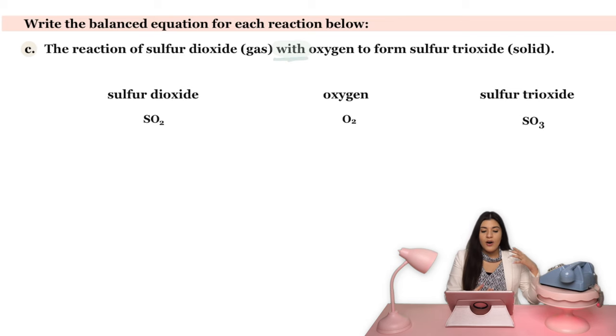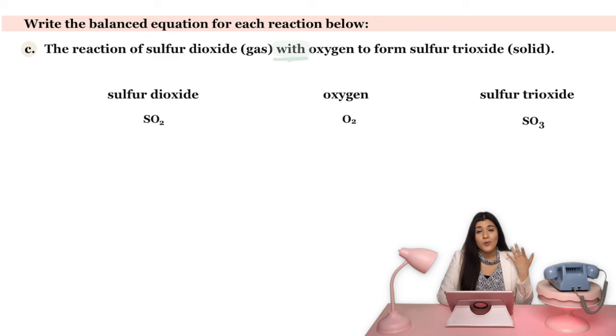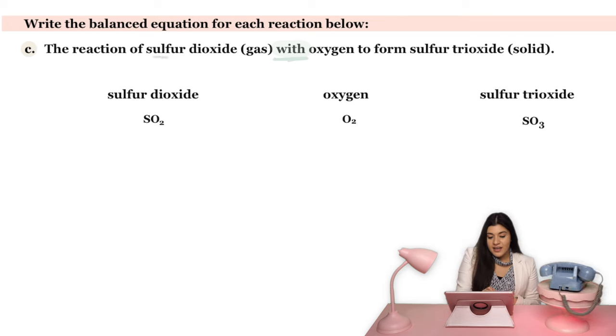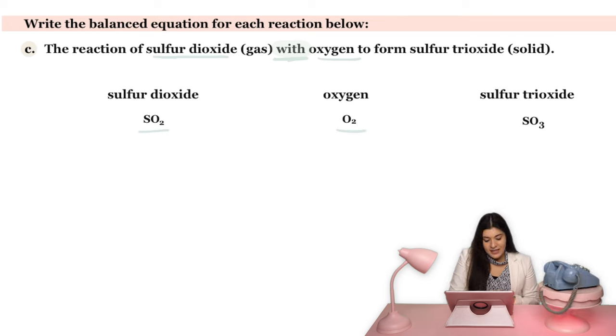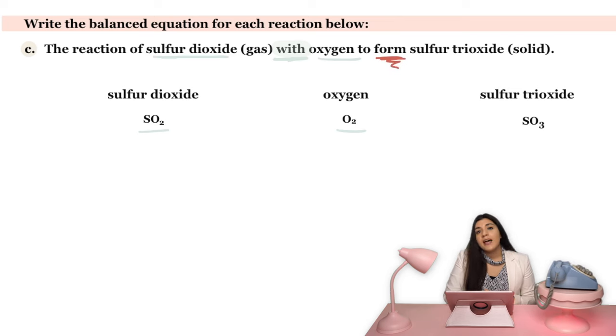Whenever it says sulfur trioxide and oxygen or with oxygen, that means we're adding those together. So the reaction of both of these, this says sulfur dioxide with oxygen. I know that both of these are going to be my reactants. Next, this states 'to form'. If something is being formed, that means it's going to be your product. So I know that sulfur trioxide is now my product.